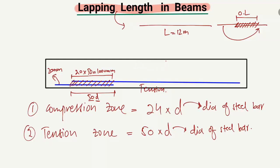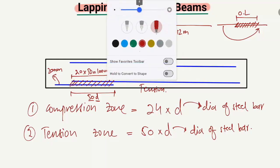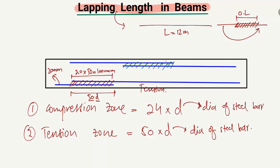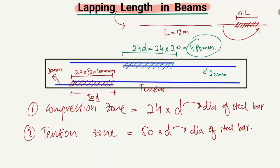Now for the compression region — here is one steel bar and here is another steel bar that we want to overlap, and they are in compression. The overlapping length should be equal to 24 × D, not 50D. So with a diameter of 20 mm, it becomes 24 × 20 = 480 mm. So 480 mm is the overlapping length of the steel bar in the compression region.